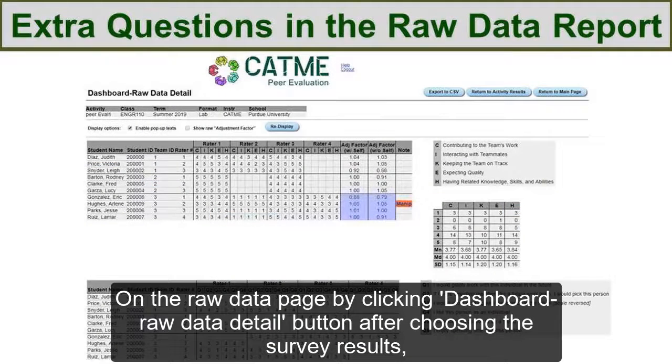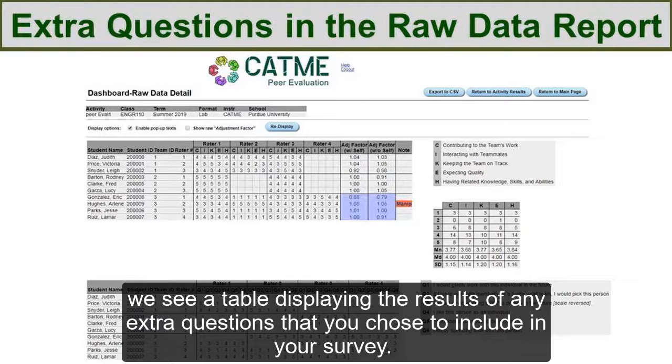On the Raw Data page, by clicking the Dashboard Raw Data Detail button after choosing the survey results, we see a table displaying the results of any extra questions that you chose to include in your survey.